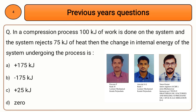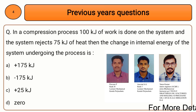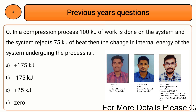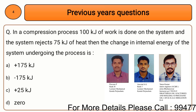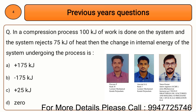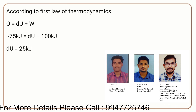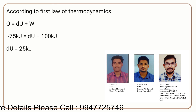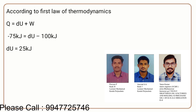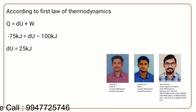Next question: in a compression process, 100 kJ of work is done on the system and the system rejects 75 kJ of heat. Then the change in internal energy of the system is — option A: +175 kJ, option B: −175 kJ, option C: +25 kJ, option D: zero. According to the first law of thermodynamics, heat transfer equals change in internal energy plus work done.